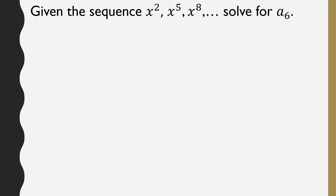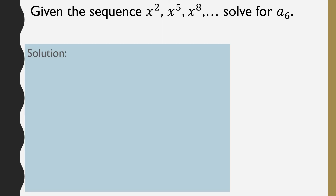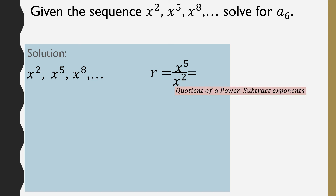Now, what if the geometric sequence has variables as its terms? For example, given the sequence x squared, x to the fifth power, x to the eighth power, and so on, solve for a sub 6. We first solve for R: the second term x to the power of 5 divided by the first term x squared. Using the law of exponents for division, we subtract the exponents: 5 minus 2 is 3, so R is x cubed.